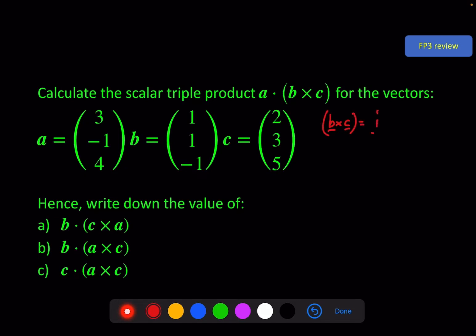Here we've got (1, 1, -1) cross (2, 3, 5), so that's 5 minus -3, minus 2 minus 2. Then a dot this will be (3, -1, 4) dot (8, -7, 1) which gives us 24 plus 7 plus 4 which is 35.